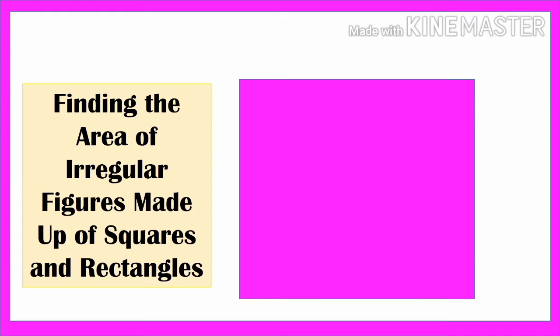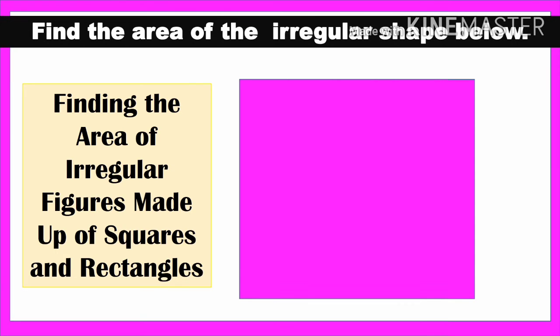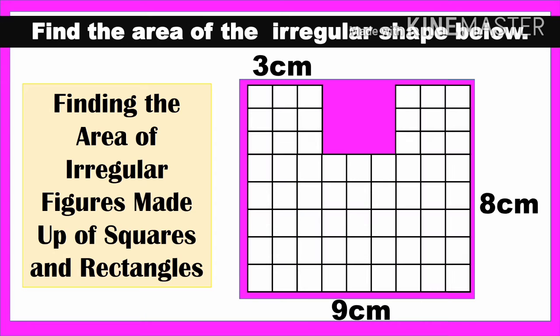Hello everyone. In this video we will study how to find the area of irregular figures made up of squares and rectangles. We have an irregular shape with sides of three centimeters, nine centimeters, and eight centimeters.